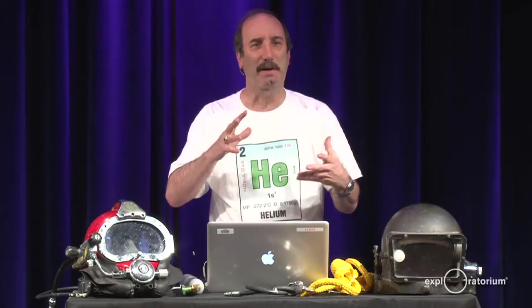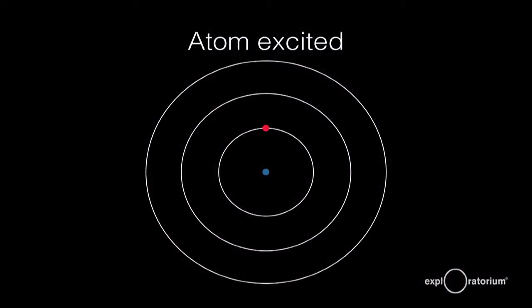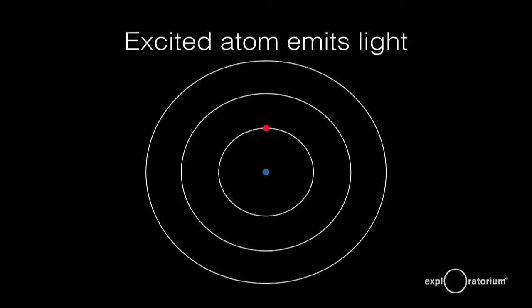Atoms give off light when they're excited. If you look at an atom, in the center you see the little blue nucleus which contains protons and neutrons — in the case of helium, two protons and two neutrons — surrounded by a shell of electrons. I can excite that electron by passing electricity through the gas. When I do that, the electron jumps up into an excited state, and almost immediately it jumps back down into the hole it left behind, giving up the same amount of energy it absorbed originally, and that gives off a little photon of light.